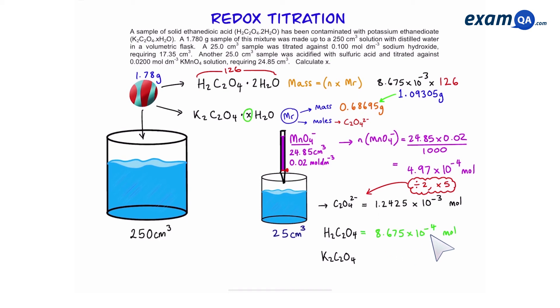The reason it's minus 4 is because we're talking about 25 centimeters cubed. So we're going to subtract the total ethane dioate from the ones that is only from the acid so that we can work out how much came from potassium ethane dioate. So that gives us 3.75 times 10 to the power of minus 4. Again this is in 25 centimeters cubed so timesing it by 10 gives us the total moles in the 250 original sample.